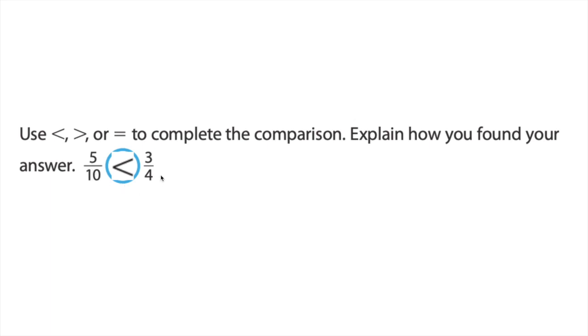What fraction with fourths as the denominator would be equivalent to one-half? It'd be two-fourths. Two-fourths is the same as one-half. But here we have three-fourths. So on this side we had a number that was exactly a half, and on this side we have a number that's greater than a half. That means this must be the greater number. And so it is.